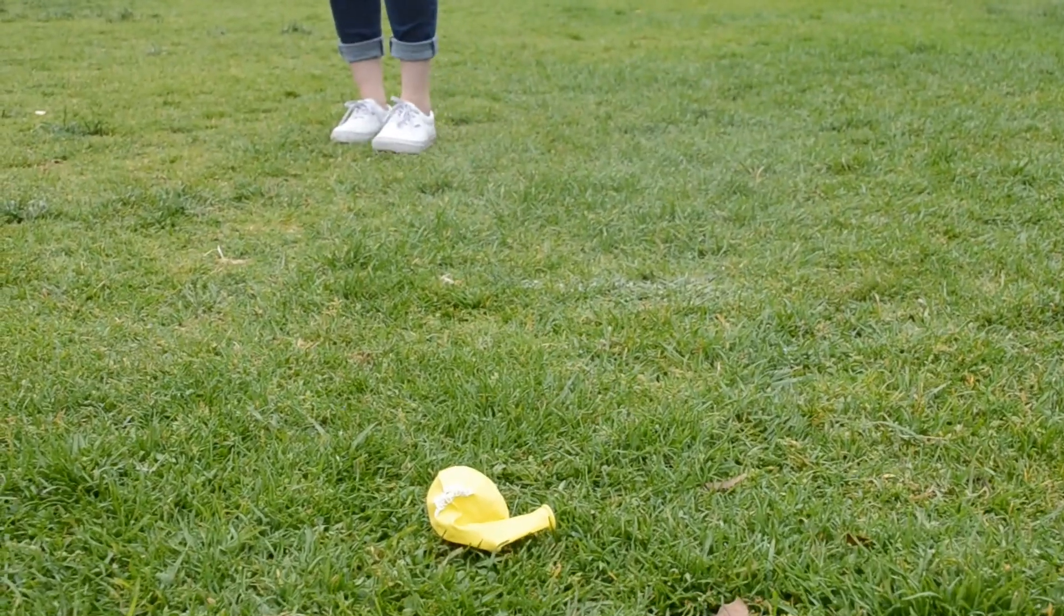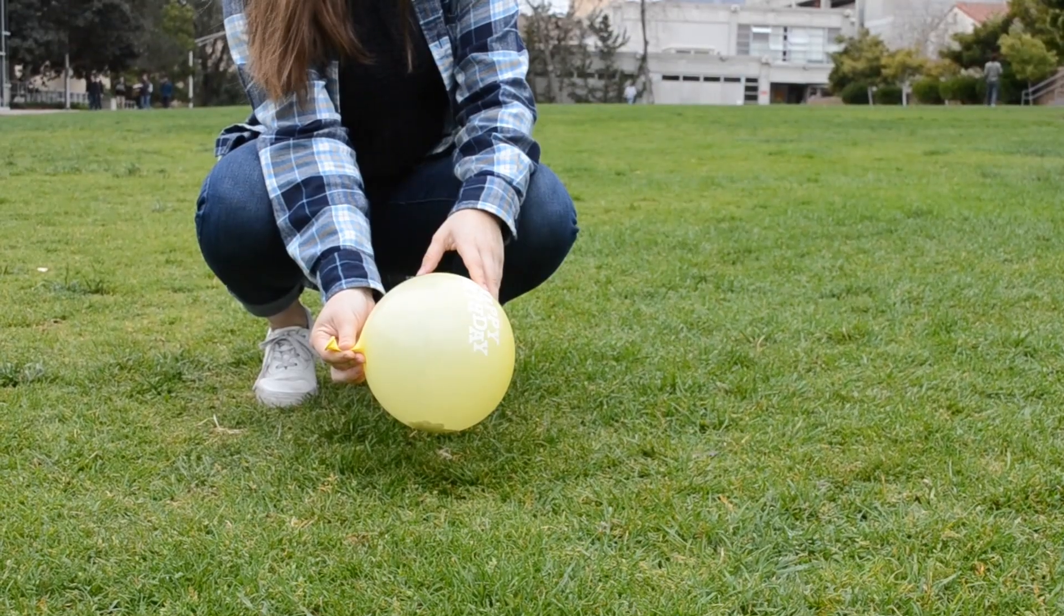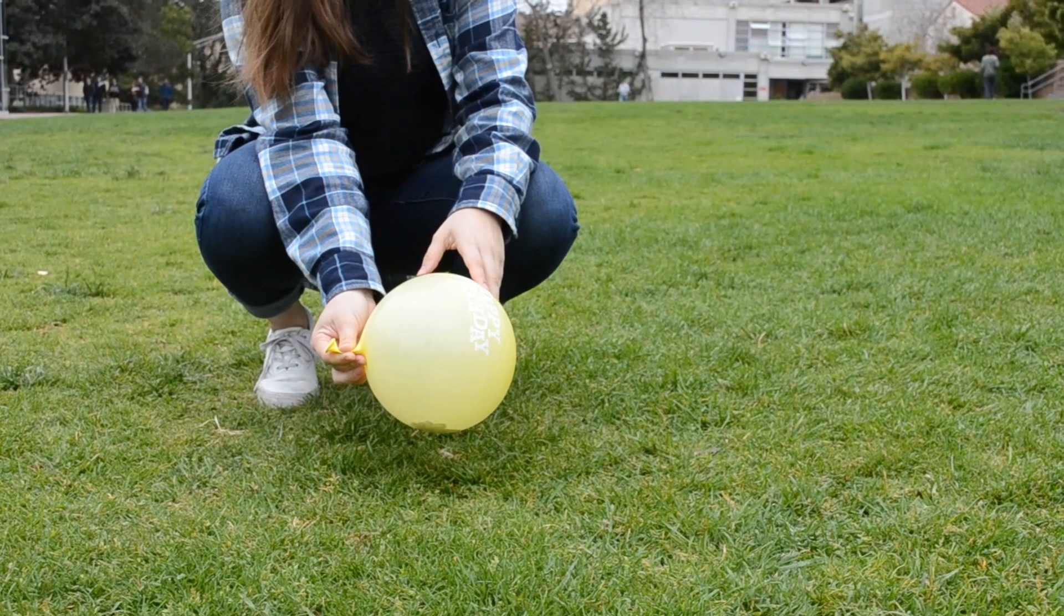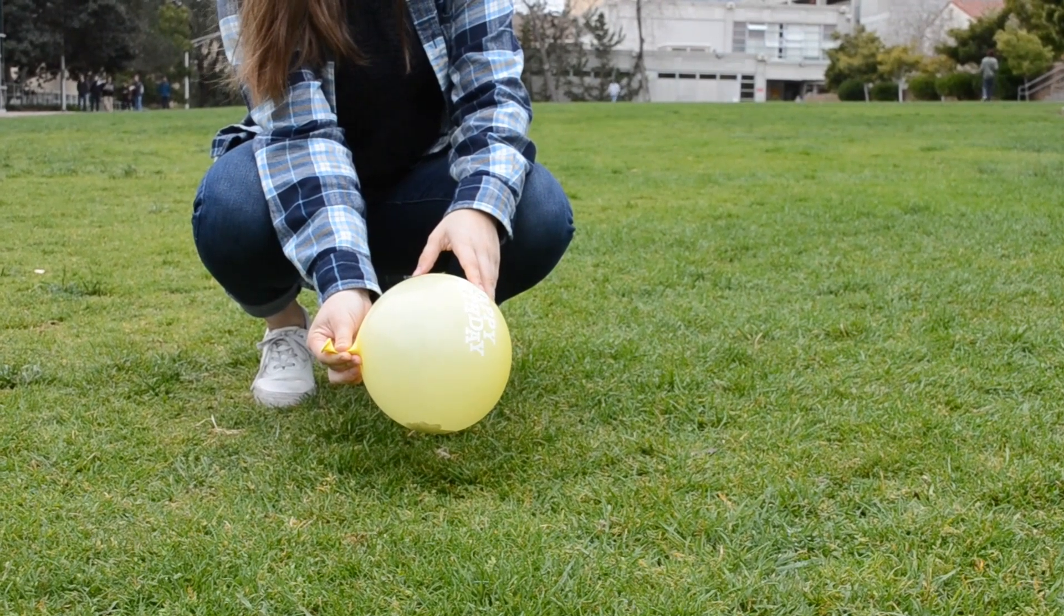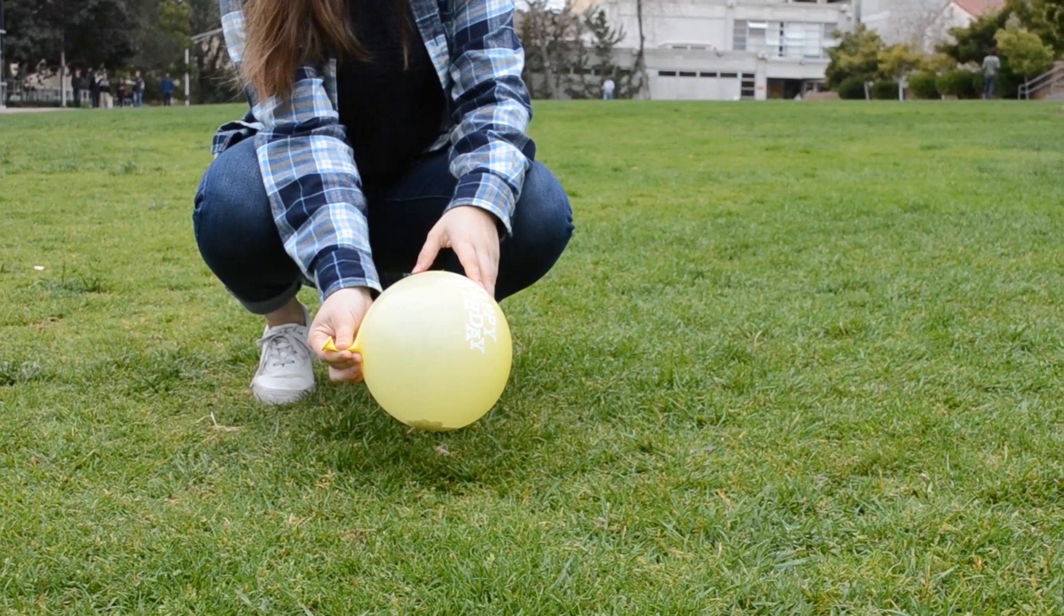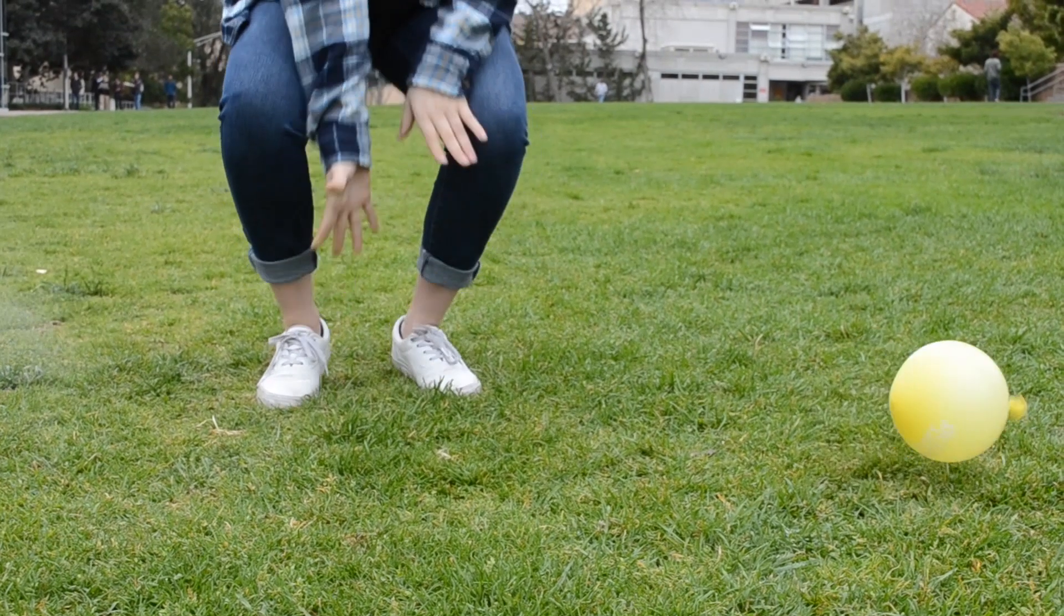Okay, so we're going to start with a balloon full of air. At this moment in time, the system has zero velocity. Then, when I let go of the balloon, the air shoots out of the balloon with a velocity, and the balloon shoots in the opposite direction.